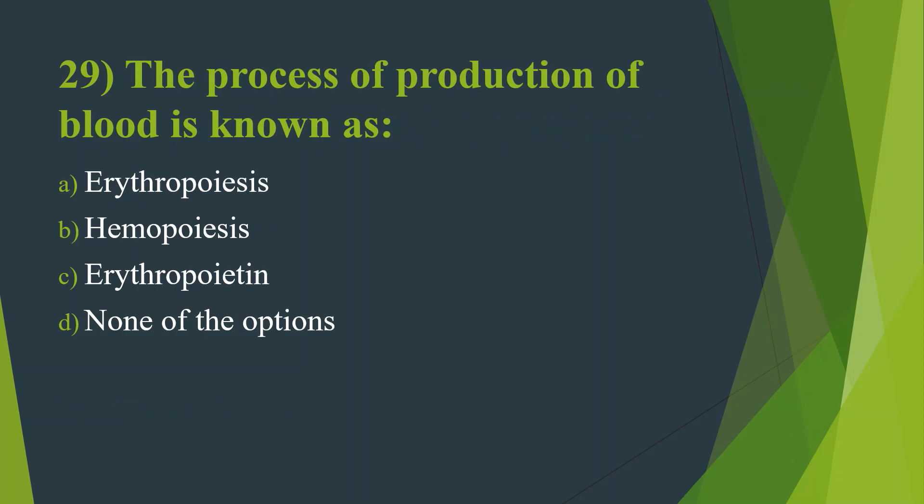Twenty-ninth question: The process of production of blood is known as — Option A, Erythropoiesis. Option B, Haemopoiesis. Option C, Erythropoietin. Option D, None of the above. Answer is Option B, Haemopoiesis.